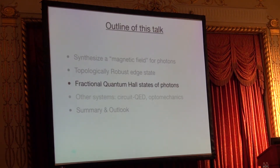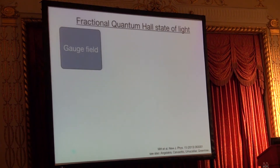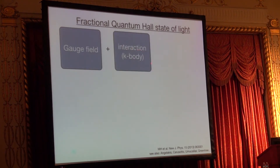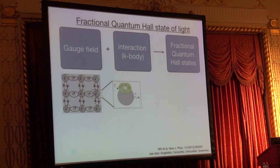Now let's move to the more interesting part: adding interaction. When we add the gauge field and then add an interaction — it can be a K-body interaction — we get fractional quantum Hall states. The real point here is that we have some on-site interaction mediated by some emitters. From atomic physics we know this is exactly the same model for bosons on optical lattices: when interaction is larger than tunneling, we expect a Laughlin state.